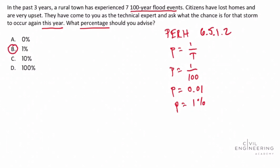The answer is 1%, and we are finished. It's important to realize that concept problems on the PE exam can sometimes be disguised with a bunch of numbers, and to work through and remember our basic concepts used to solve the problem.